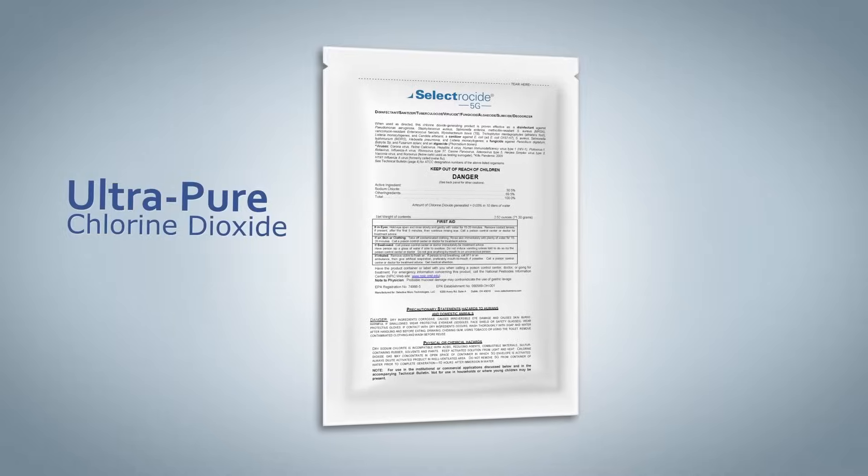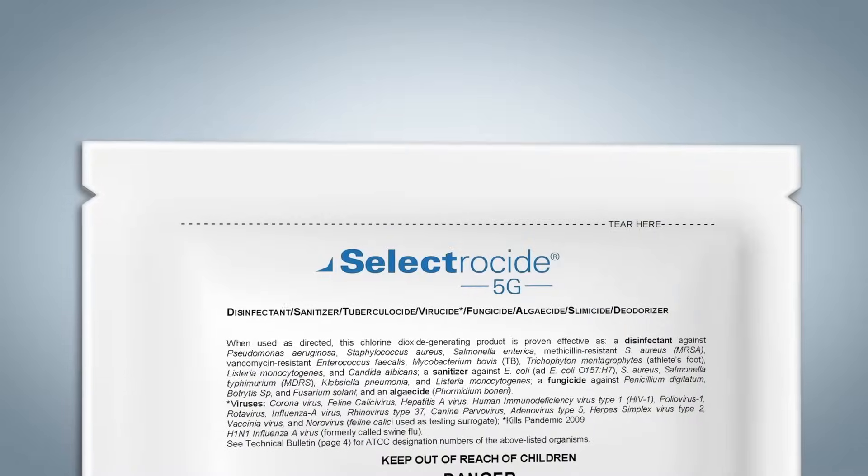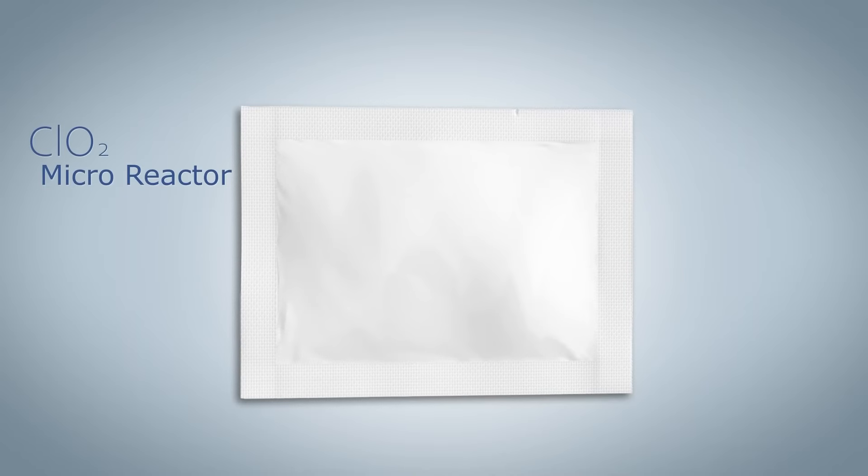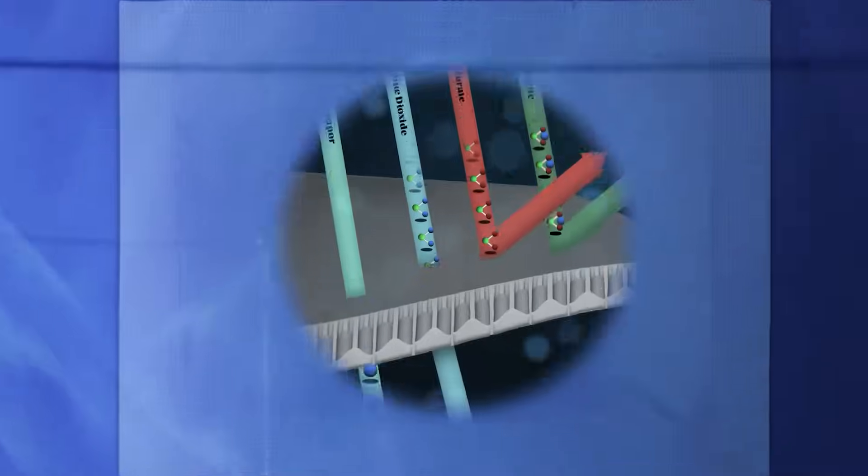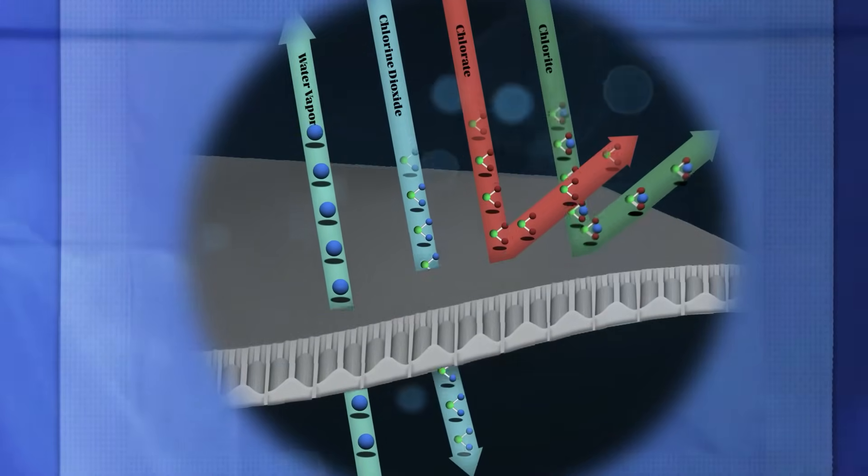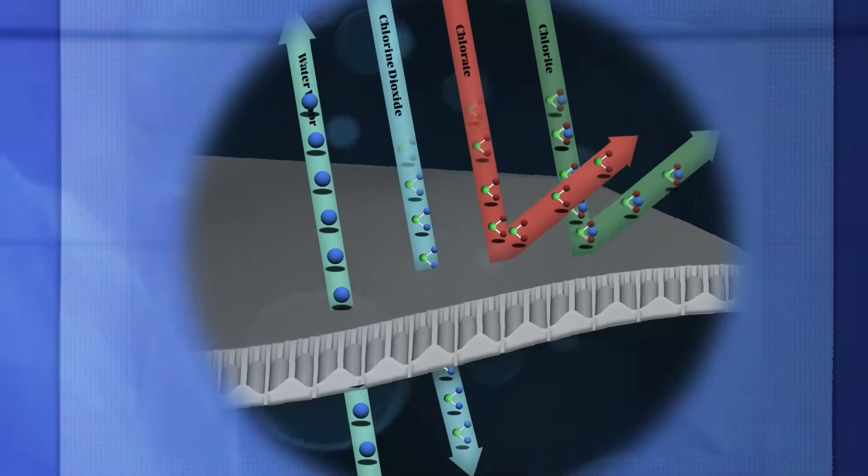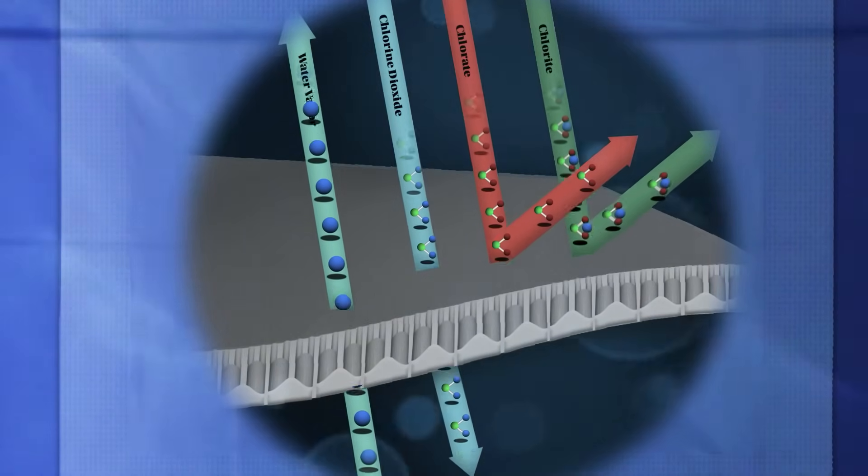Why is Selectricide more affordable? It all starts with our innovative packaging. Selectricide comes in a dry form. This means we're able to ship it in lightweight packages, slashing shipping costs and reducing our carbon footprint. When you receive it, you'll activate it right where you need it, which means no wasted product and no unnecessary packaging.